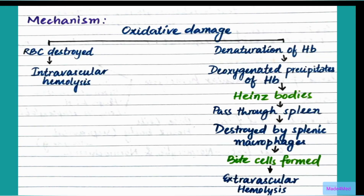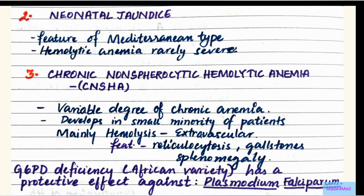Oxidative damage by these triggers can lead to either intravascular or extravascular hemolysis — mostly intravascular hemolysis — causing acute hemolytic anemia. This oxidative damage also causes denaturation of hemoglobin, leading to deoxygenated precipitates of hemoglobin that form Heinz bodies. When RBCs containing Heinz bodies pass through the spleen, splenic macrophages attack and bite off portions of the cell, making them appear as bite cells — this is extravascular hemolysis.